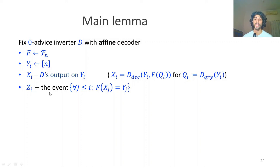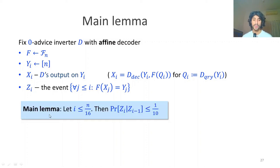The main lemma on which the proof hinges is as follows. We use an inverter D which has fixed or zero-length advice but still has an affine decoder. We define random variables: F is the function chosen for inversion. Y from one to whatever are various challenges which we try to invert using D. The Xs for any i are these outputs on the various Ys. We choose a function at random, give this zero-advice inverter different Y values, and each time it outputs an X value. We define the event Z_i, which means from one to i we've succeeded doing all of the first i inversions - all of them succeeded and D managed to find a proper pre-image.